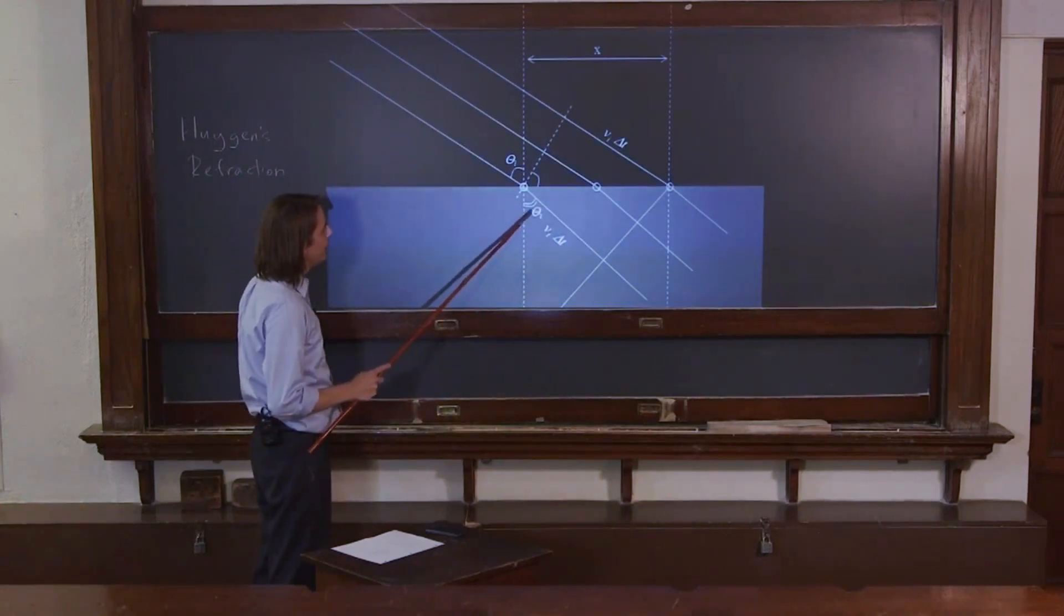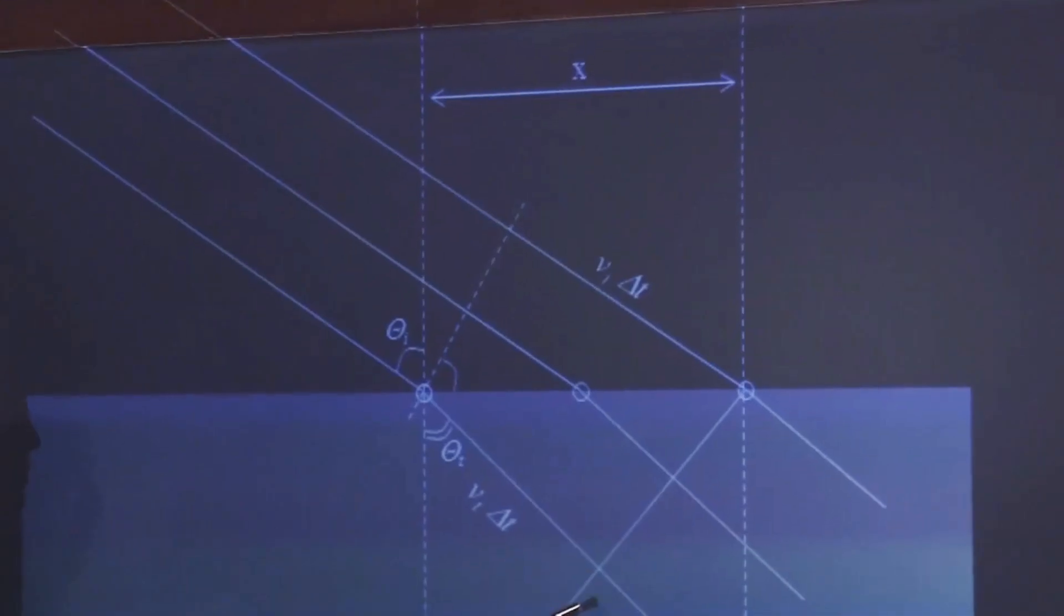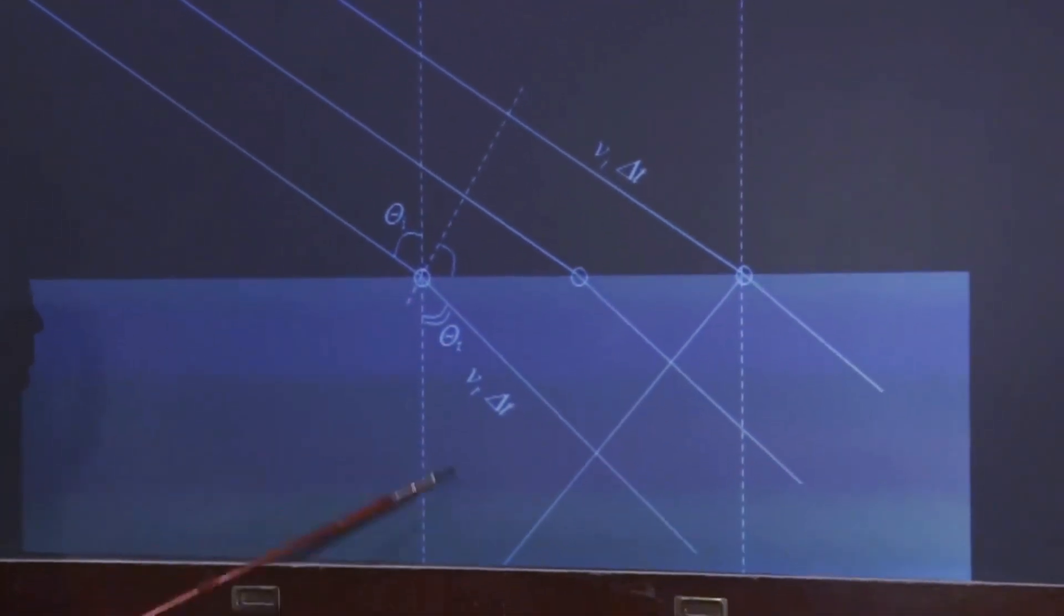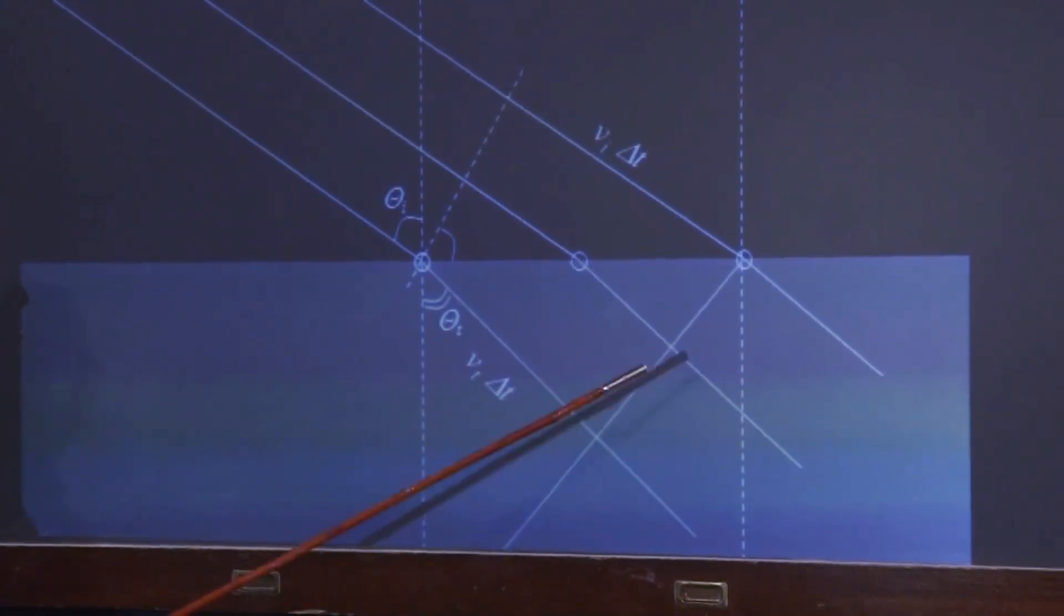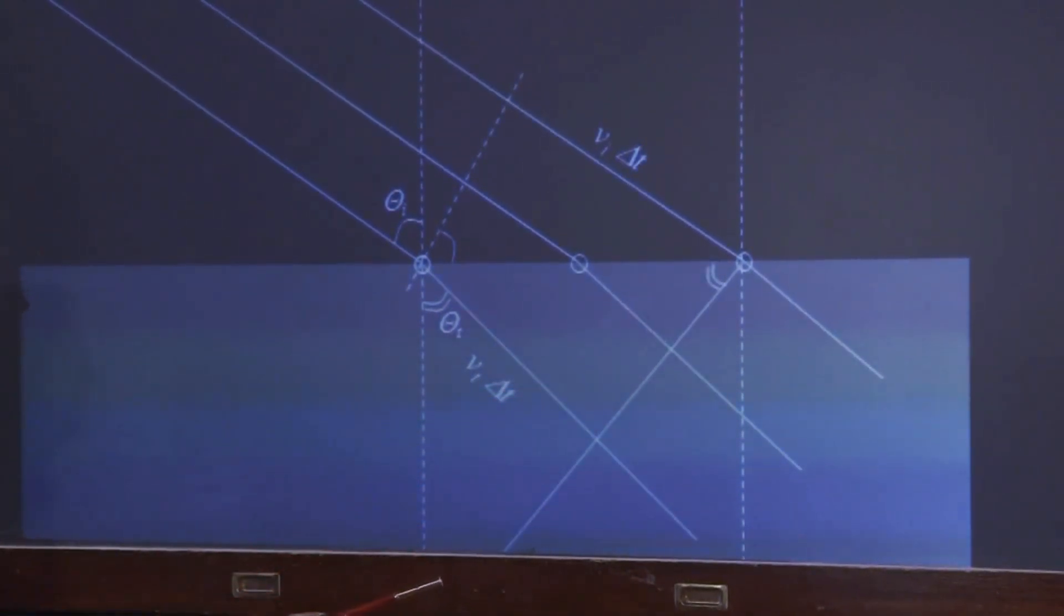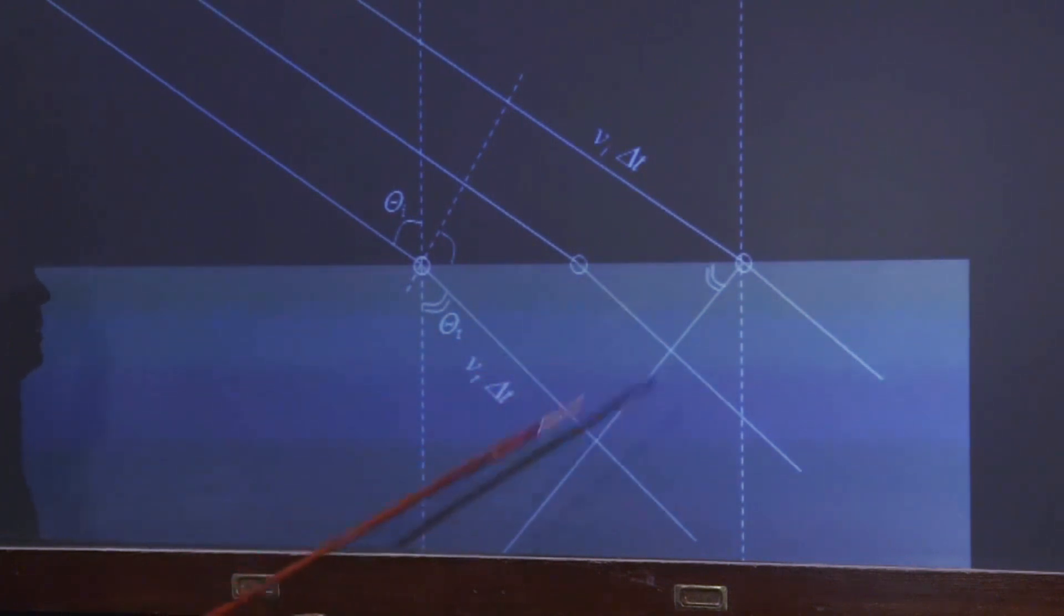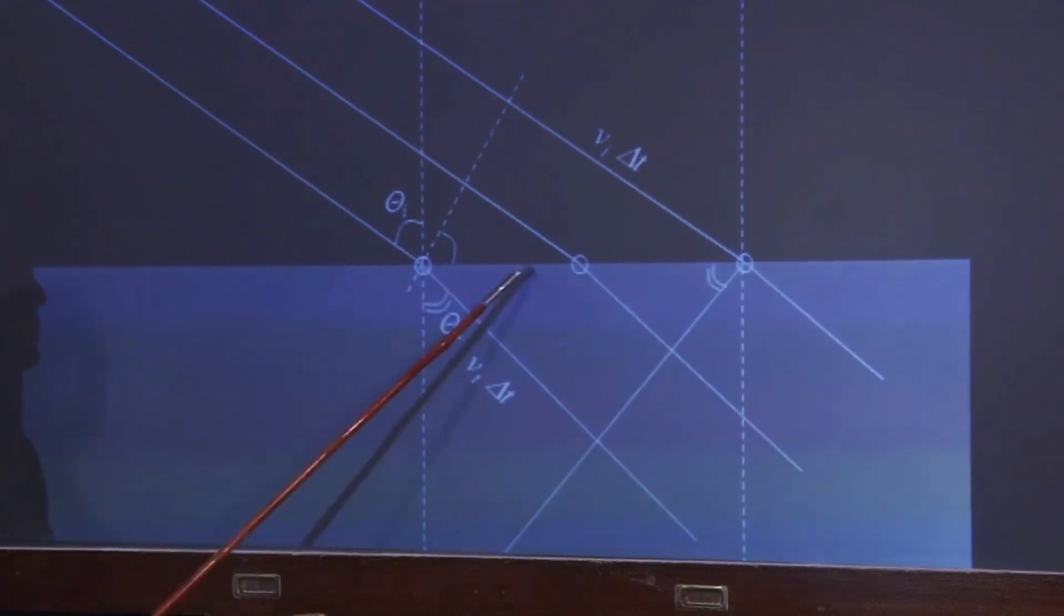We'll call that X again, and now we want to think about theta T, right? So here we have this right triangle that's almost complete here, and then this angle is the same as that angle, so it's a similar triangle there, so we know that's also theta T. So there's a little bit of geometry there, but this is the theta T, and this is theta I. So now we have two right triangles here that we can think about.